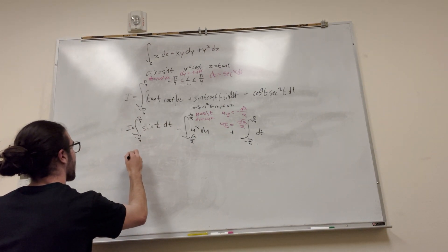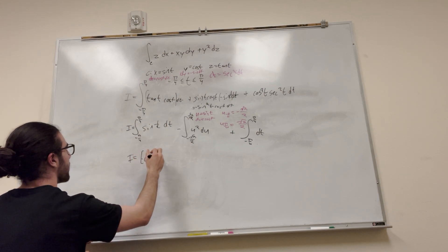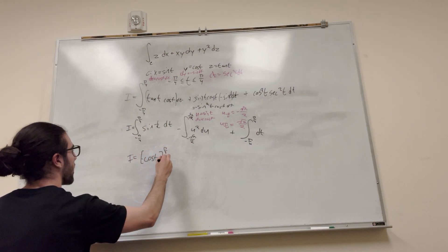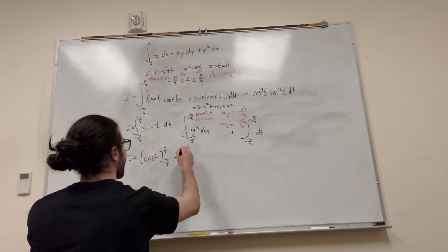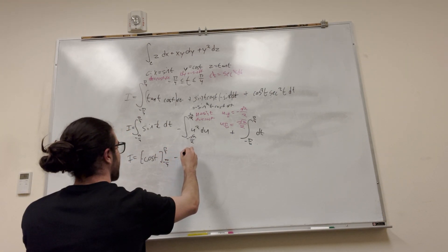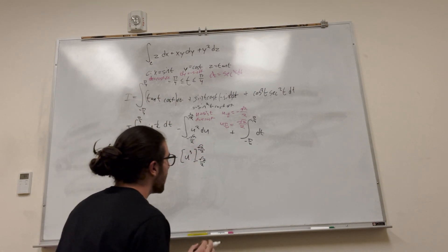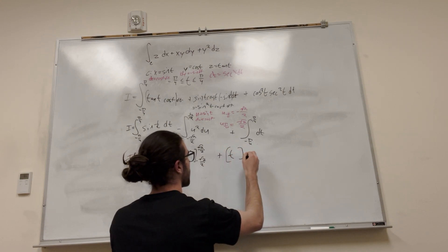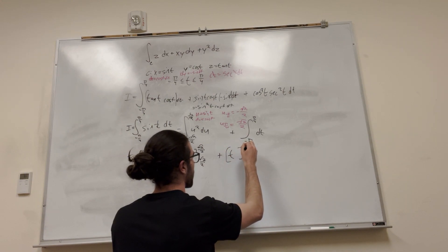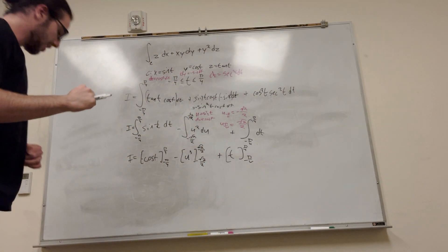So this is an easy integral. I is equal to cosine of t, but negative cosine of t from pi over 4 to negative pi over 4. Over here, it's going to be u to the third, from negative radical 2 over 2 to radical 2 over 2. And then over here, it's just going to be plus t from negative pi over 4 to pi over 4. Pretty good. How long we got? 4 to 20, let's go.